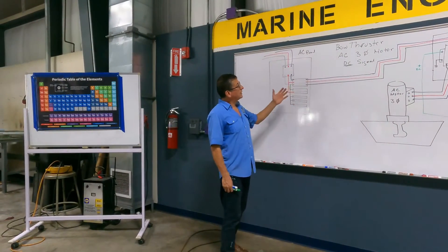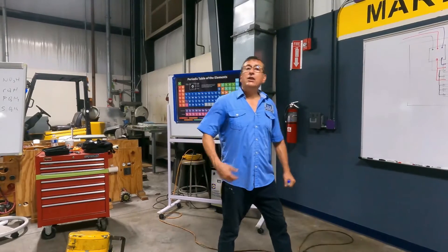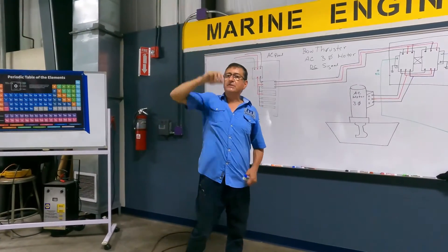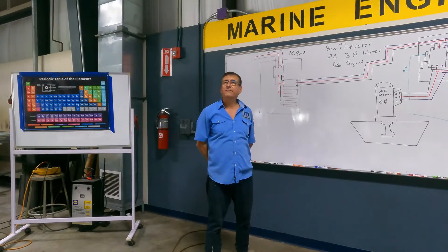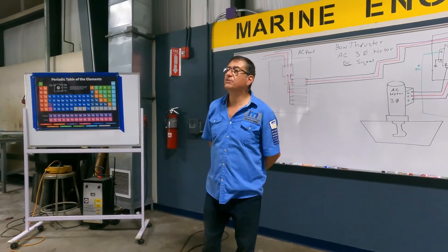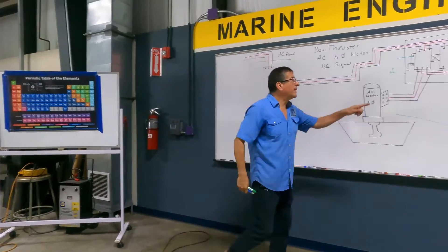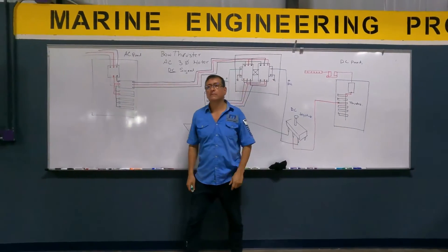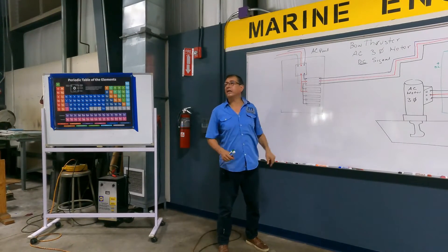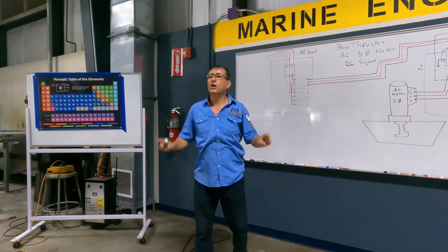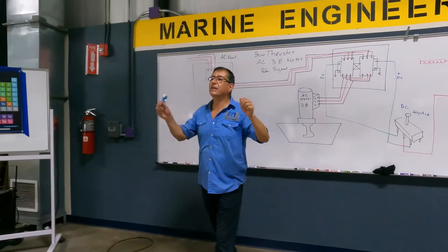The bow thruster motor is three-phase AC with contactors, and the joystick signal is DC. You can install another joystick in another location — in parallel. To activate this bow thruster: first, turn on the breaker in the DC panel for the joystick; second, turn on the three-phase breaker in the AC panel for the thruster. You have two breakers — one breaker for the motor and one small single-phase breaker for the DC signal.